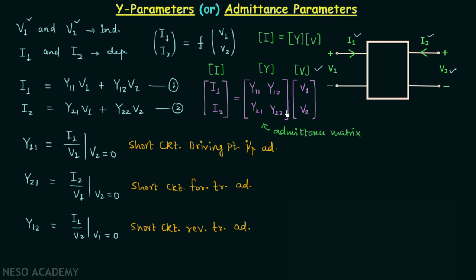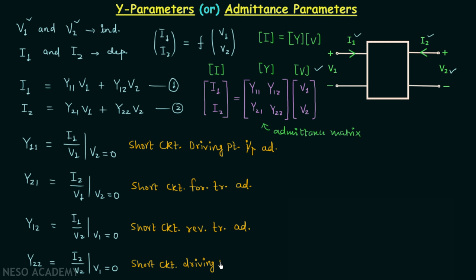For the final parameter Y22, from equation 2 with V1 equal to 0, Y22 equals I2 divided by V2 when V1 equals 0. The input port is short-circuited. Since I2 and V2 belong to the same port — the output port — this is the short-circuit driving point output admittance. In this way we have obtained all four Y parameters.